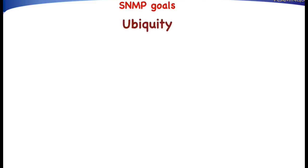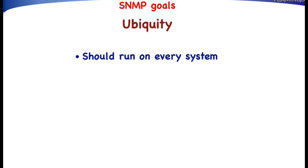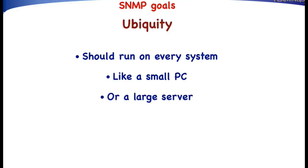The first goal is Ubiquity, which basically means that it should be possible to run SNMP on every system. In the early 1990s, people were thinking of small PCs but also large servers. Nowadays, SNMP is able to run on very small devices such as microcontrollers and embedded systems.